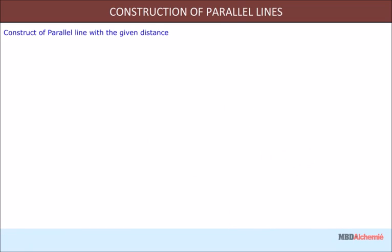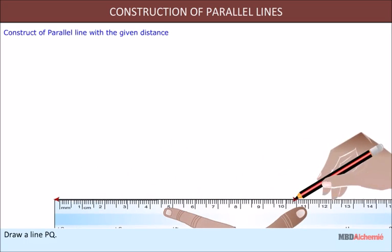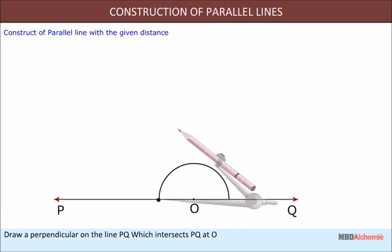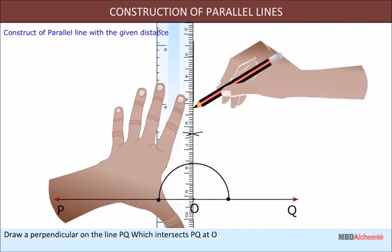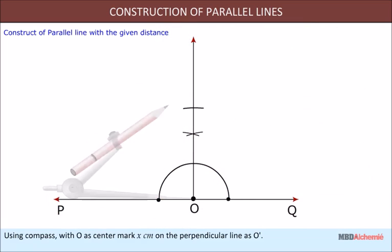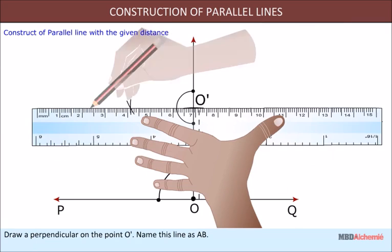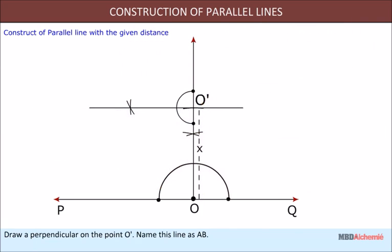Here we will learn to construct parallel lines with a given distance. Draw a line PQ. Draw a perpendicular on the line PQ which intersects PQ at O. Using compass with O as center, mark x centimeter on the perpendicular line as O'. Draw a perpendicular on the point O', name this line as AB. Therefore, line AB and PQ are parallel lines.